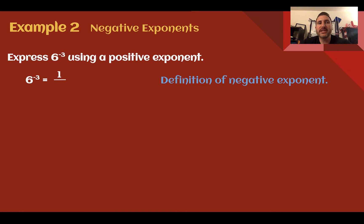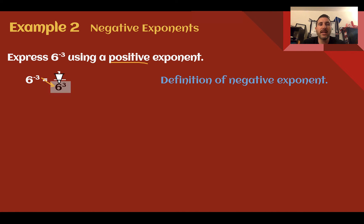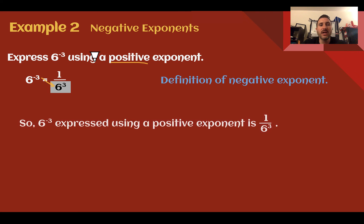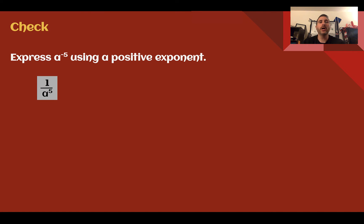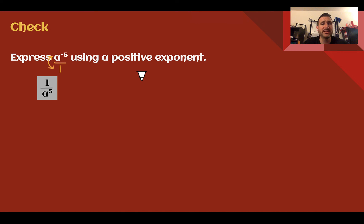Example 2 — negative exponents. Express 6 to the negative 3rd using a positive exponent. When simplifying expressions with exponents, the final answer cannot have negative exponents — only positive. So 6 to the negative 3rd is not simplified. Using the negative exponent rule, we move it to the denominator: 1 over 6 to the positive 3. Check your understanding: express a to the negative 5 using a positive exponent. The answer is 1 over a to the positive 5. Take the base and exponent, move it to the denominator of the fraction, and make it positive. Another way to think about it: it's like flipping the fraction — the multiplicative inverse, or reciprocal — and making the exponent positive.